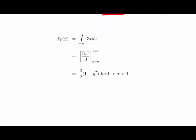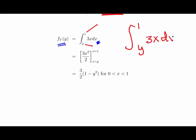Similarly, for the marginal density of y, we integrate the joint PDF with respect to x. The range of values of x is y up to 1, so those are our upper and lower bounds. It's a straightforward integration: the integral of 3x dx gives us 3x²/2, with upper and lower limits of x = 1 and x = y.